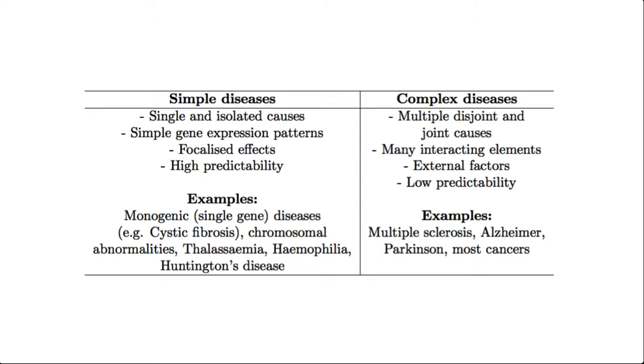In contrast, simple diseases have single or easily identifiable and isolated causes. They may come from punctual genetic mutations, such as a type of breast cancer. The outcome of simple diseases is much easier to predict in that they have well-defined effects. Examples of simple diseases and conditions under this specific definition include cystic fibrosis, Down syndrome, and Huntington's disease.